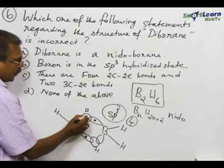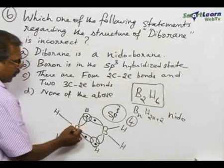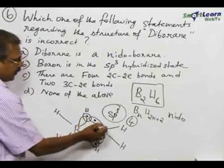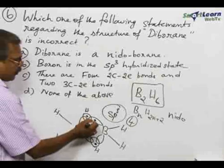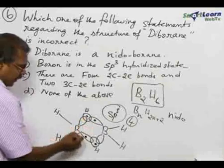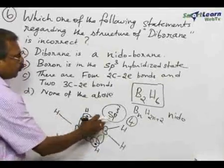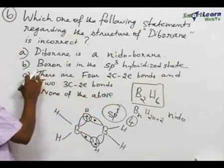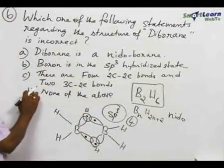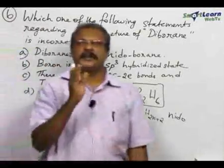Hydrogen gives one electron here and one electron there. So the three centers are: boron one, hydrogen, and boron the third. These are three-center two-electron bonds, and the remaining four are two-center two-electron bonds. Statement C is also correct. Since all the statements are correct, none of the statements is incorrect. Therefore, select option D.